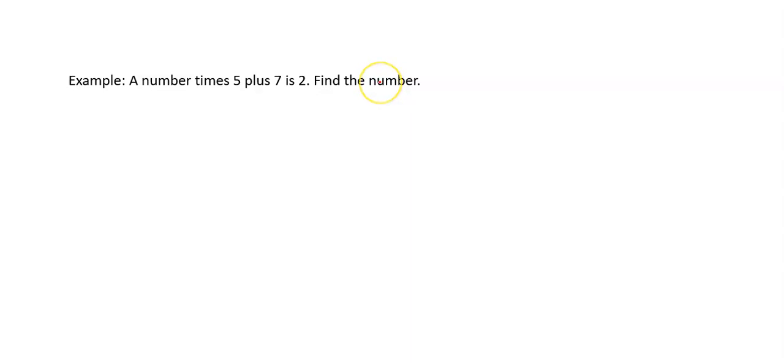Without using algebra, we may still be able to solve it. For example, you can try to guess what the number is. Say the number equals 1. 1 times 5 plus 7, well, it's 12. It's not 2, so it's not 1. It could be 2. 2 times 5 is 10 plus 7 gets bigger. So probably it's going to be some negative numbers.